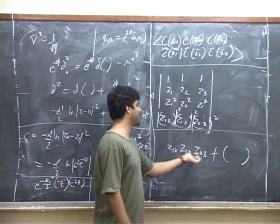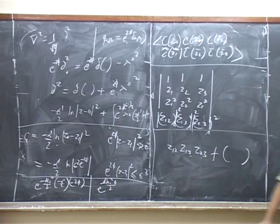Therefore this correlation function has to be z1,2, z1,3, z2,3. No other options.